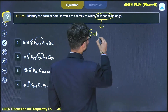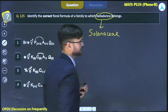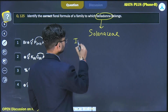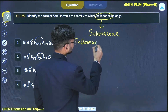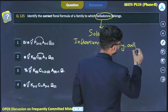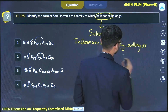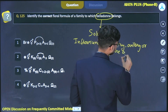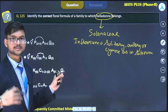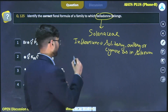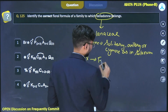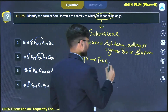In the Solanaceae family, you will find certain floral features. The inflorescence is solitary axillary or cymose, as in Solanum. The calyx consists of five sepals which are united, showing valvate aestivation.